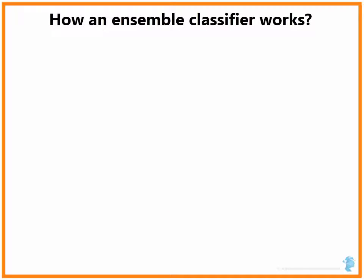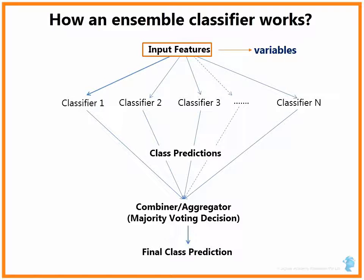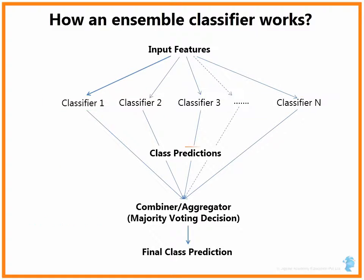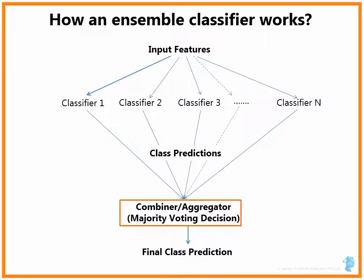Let's understand how an ensemble classifier works. The diagram on your screen gives an idea of how this works. You have the input features, which are your exploratory variables. You can think of each classifier as one single decision tree, and each single decision tree makes its own class prediction. For example, determining if a particular credit card transaction is fraudulent or non-fraudulent. Finally, if you combine all 500 class predictions using majority voting, you arrive at the final class prediction. This is the basic concept of the ensemble classifier.